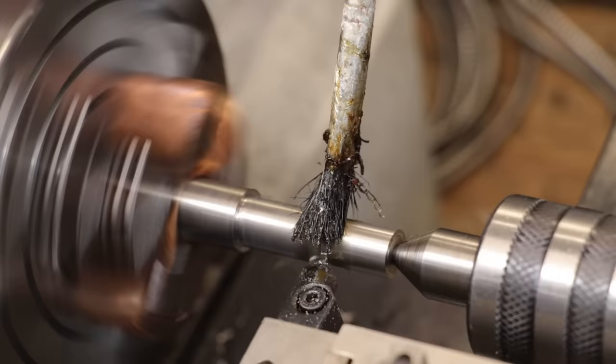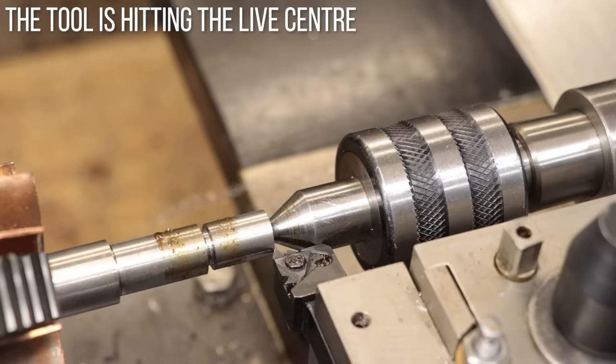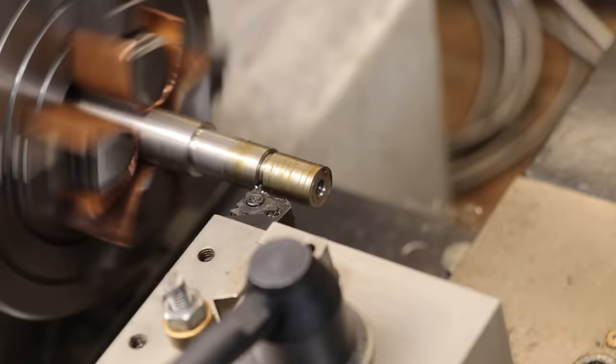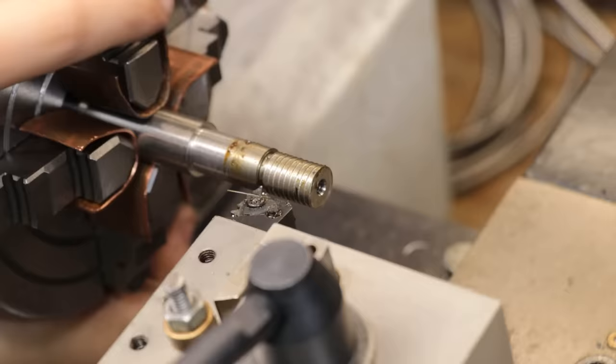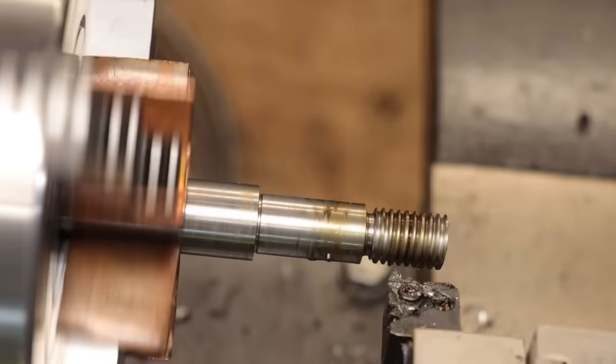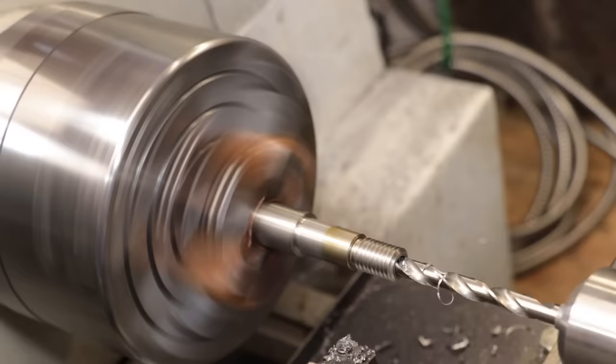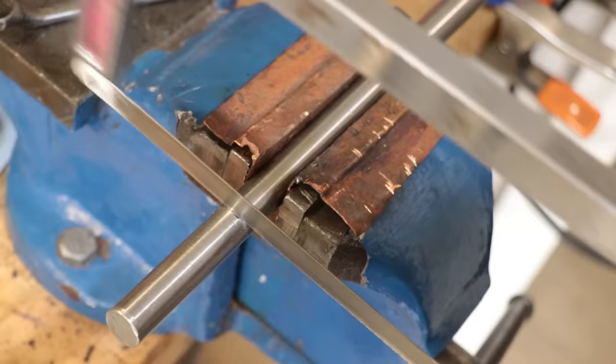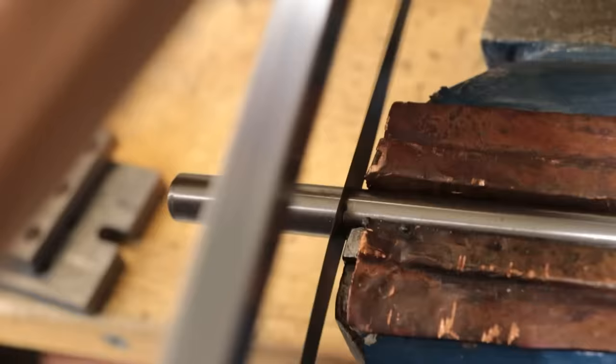Now to help it self-tighten, one end is going to have reverse threads, which I'll have to single point cut. I don't exactly keep a reverse thread M12 tap on hand. I'll then get it cut to length, and then the other side will get the exact same step down, except with a normal thread.